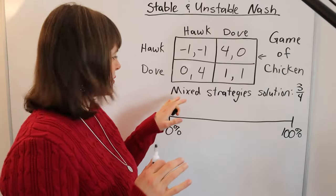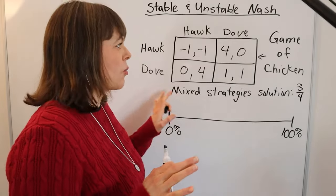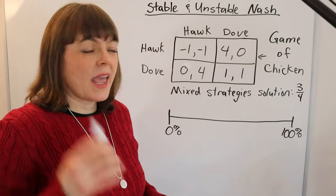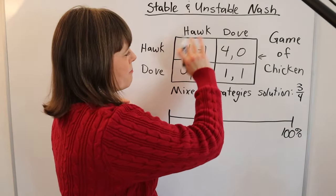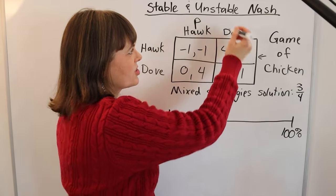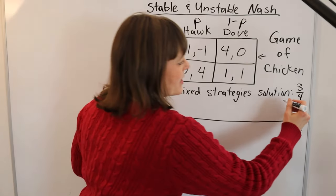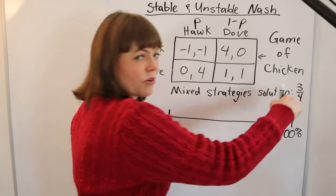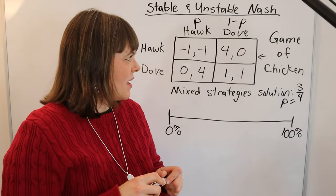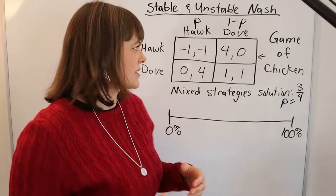I'm not going to explain how to solve mixed strategies Nash equilibrium in this video, but I will post another video where I solve this exact game to come up with the mixed strategies Nash equilibrium. The solution is p equals three quarters — three quarters of the population will have the hawk strategy, one minus p, so one quarter, will have the dove strategy. The style of this particular game is a game of chicken, and I have a video explaining some classic game styles.